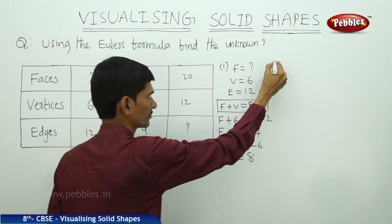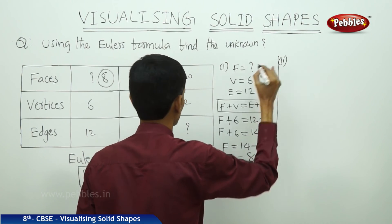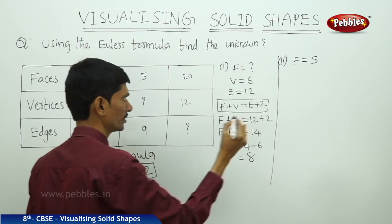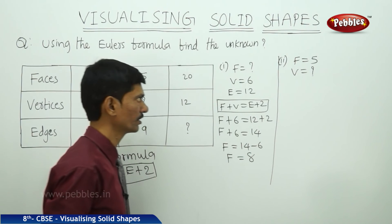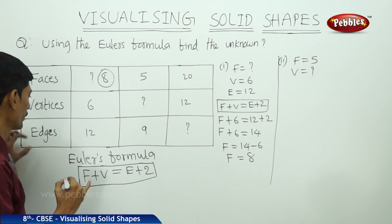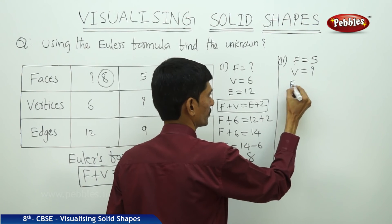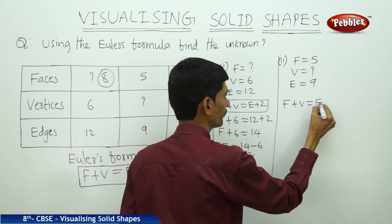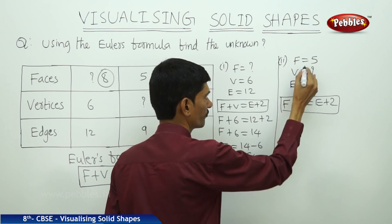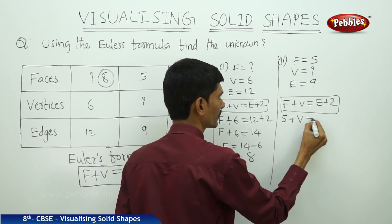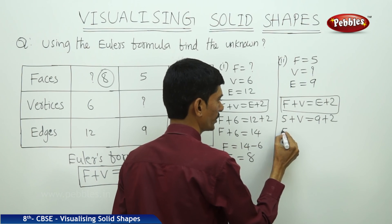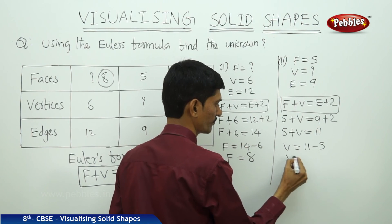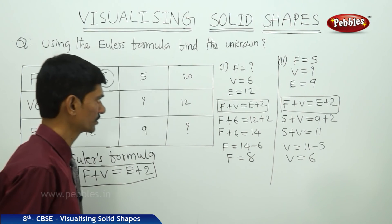In the second case, F = 5 and E = 9, and we must find V. Substituting into F + V = E + 2: 5 + V = 9 + 2 = 11. So V = 11 − 5 = 6. The number of vertices in the second case is 6.